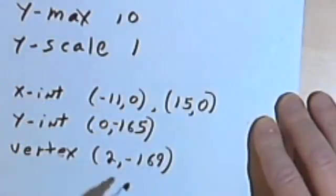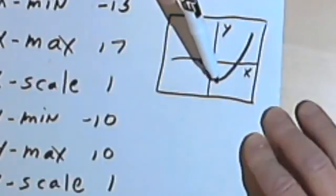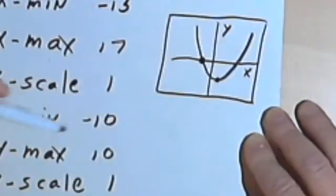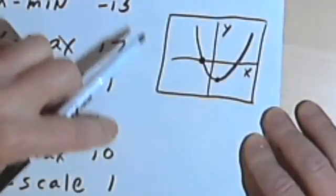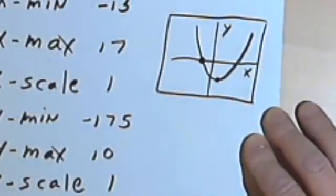That was negative 169. So that means I want to make sure my graph goes down at least as far as negative 169, so I can include this vertex. Let's make it go a little lower. Let's make the y-minimum be negative 175.